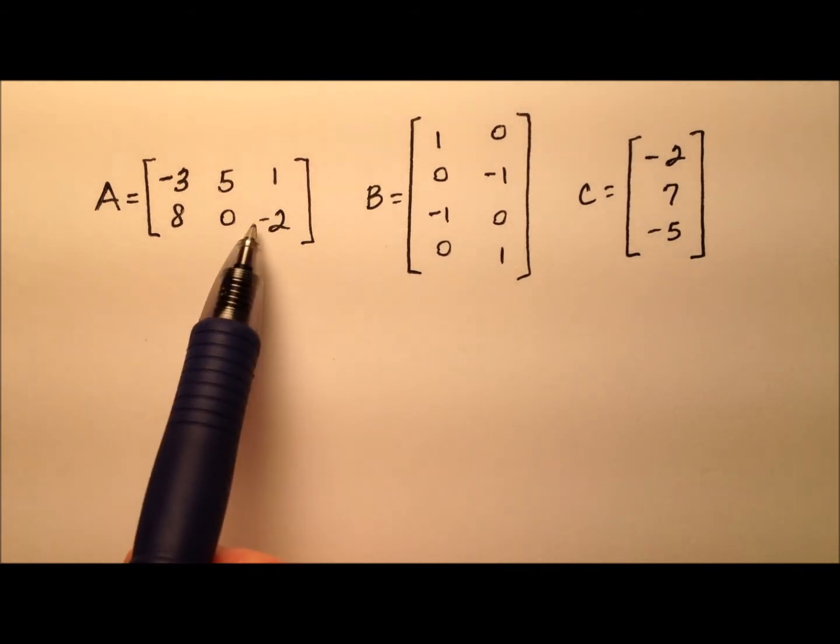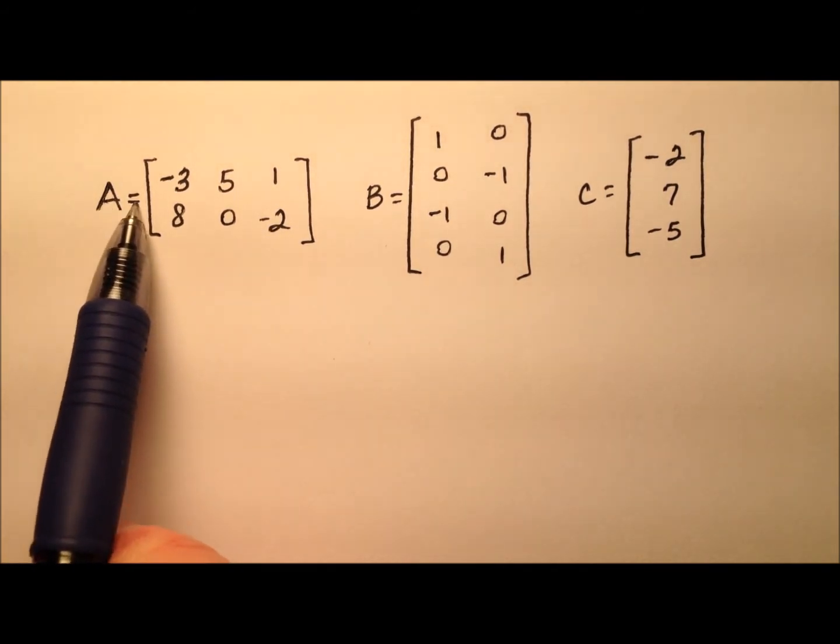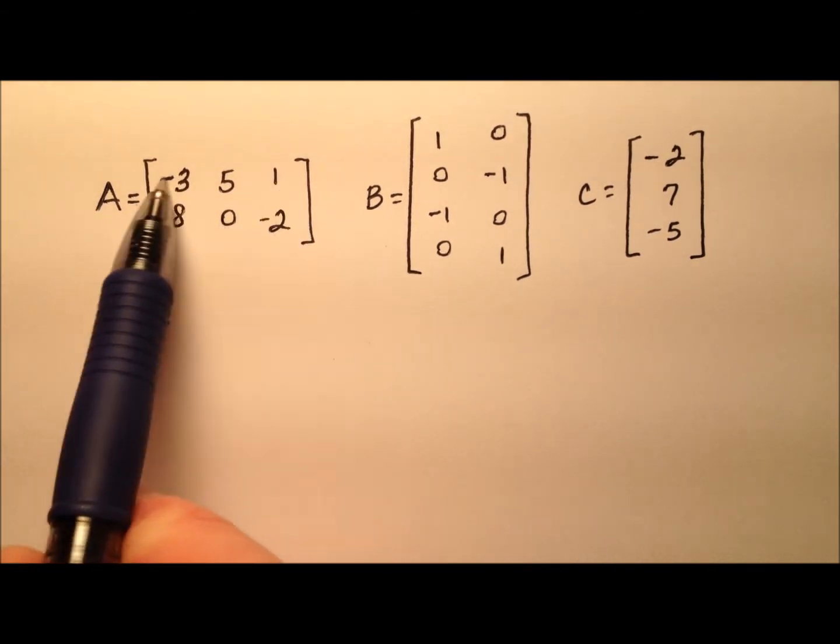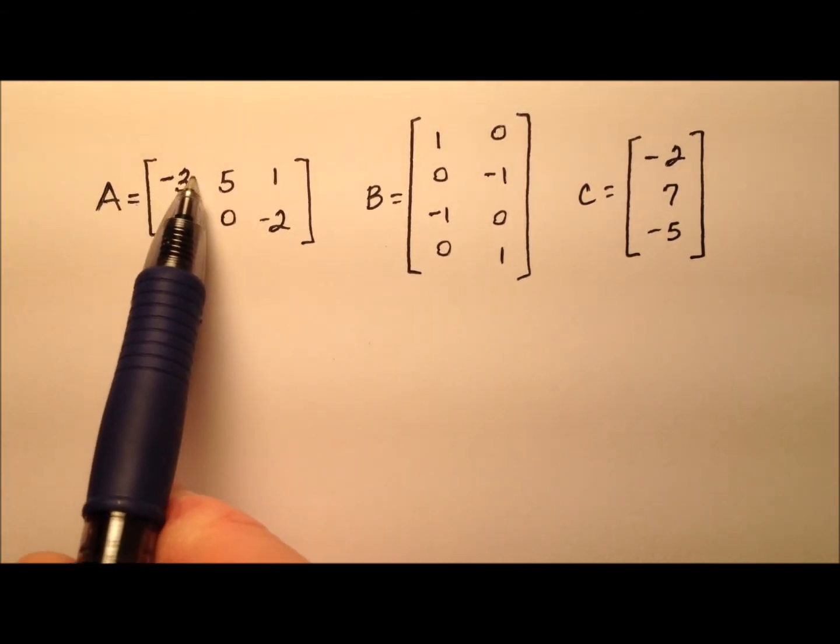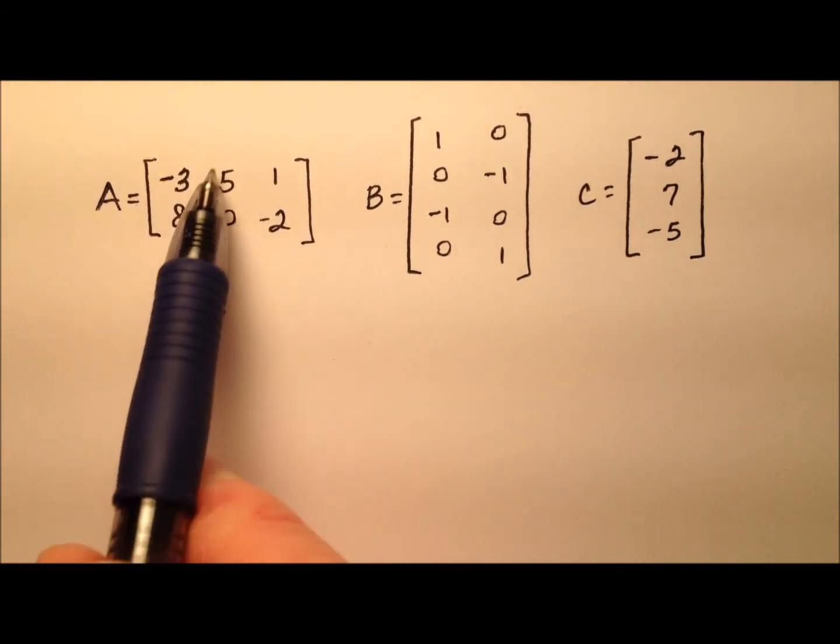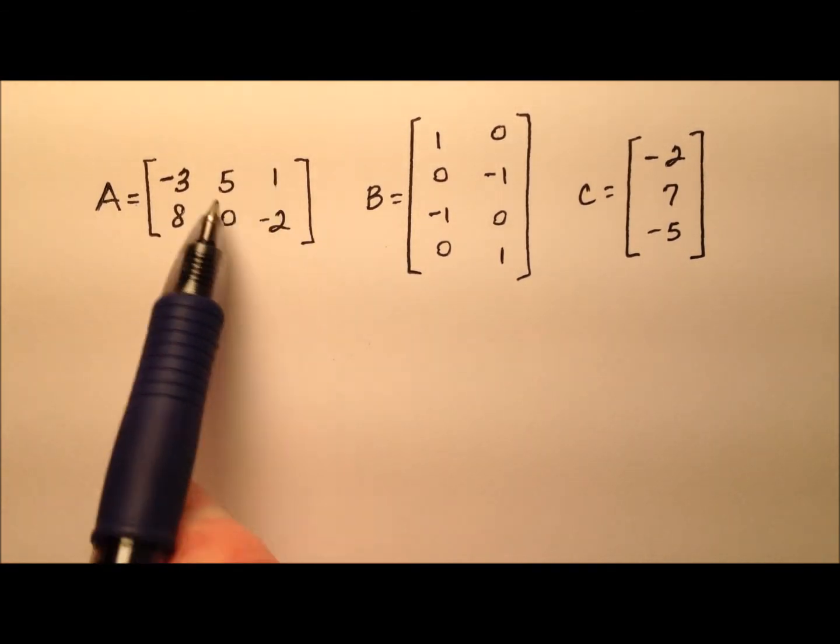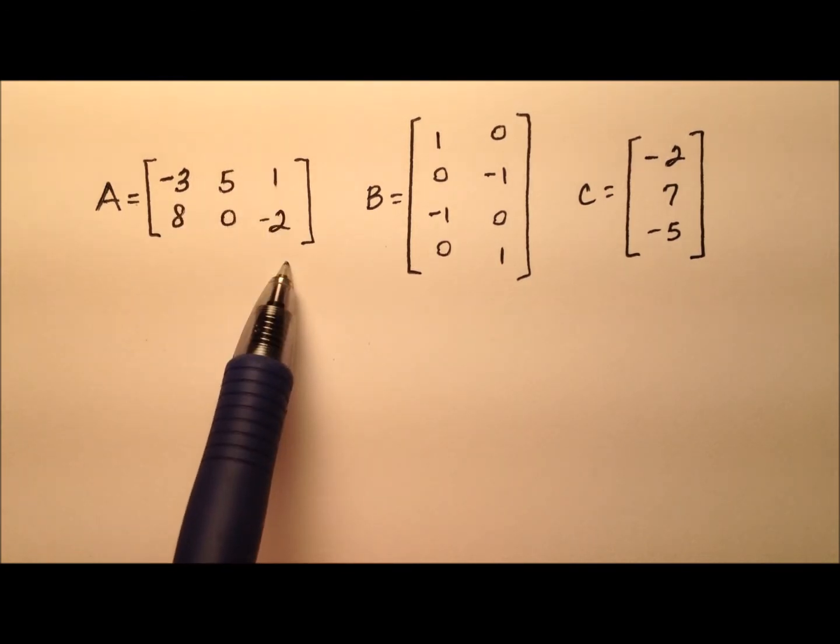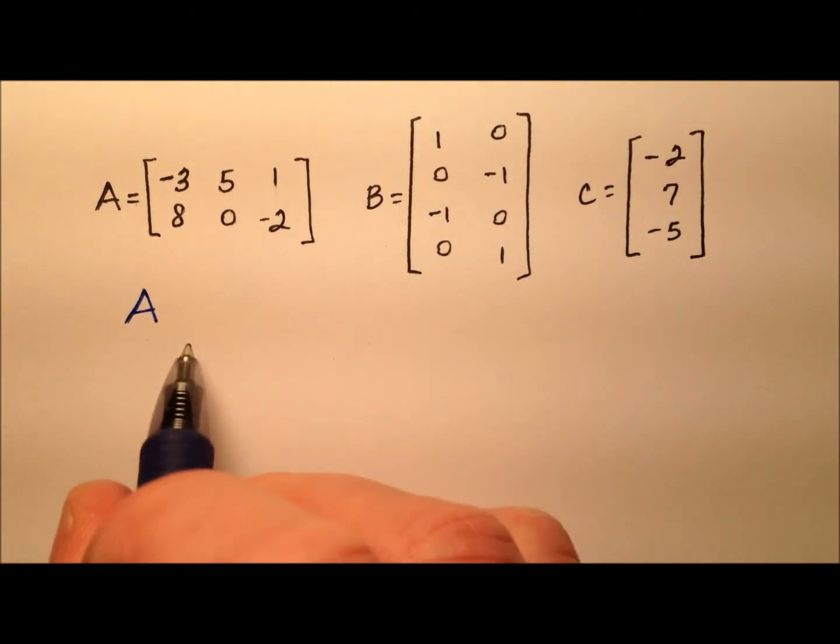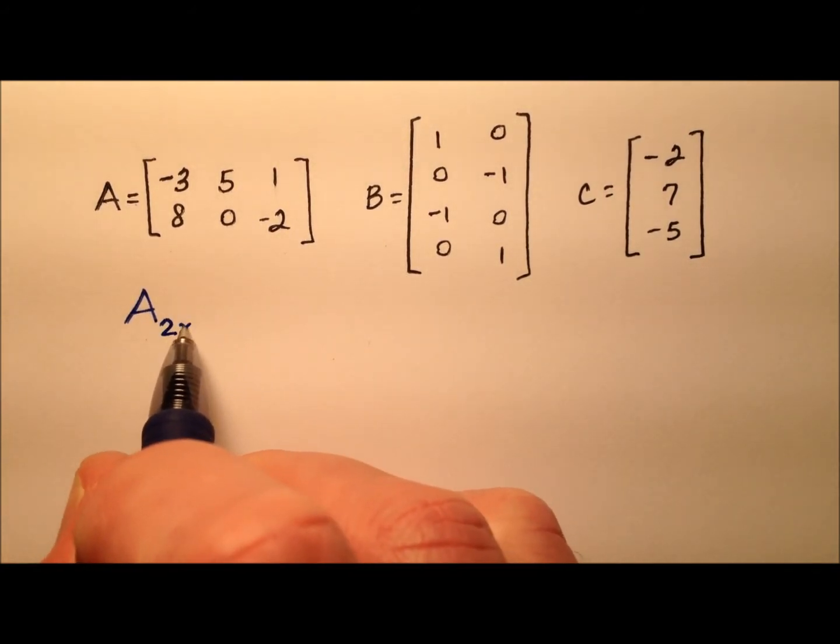Let's look at A first. A is given by this matrix here, and it looks like we have two rows, because these are the values going across, and there's two of them. And it looks like we have one, two, three columns. Columns go up and down. So if there's two rows and three columns,